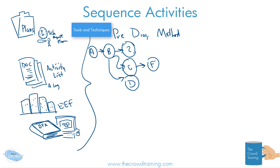You also have the various dependency relationships that help determine sequencing: finish-to-start, start-to-start, start-to-finish (which is pretty rare but can happen), and finish-to-finish. There's a whole other video that explains each of these in detail, so go back through your material from the training to learn about those.